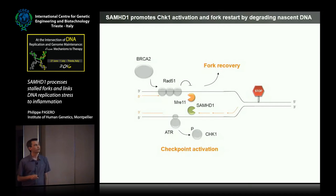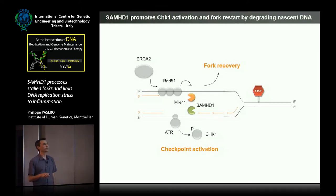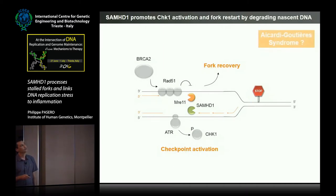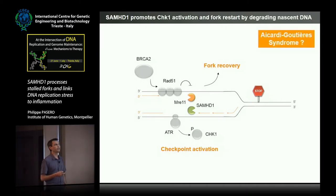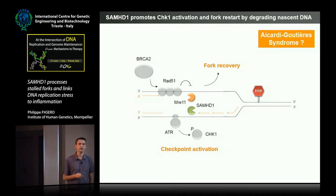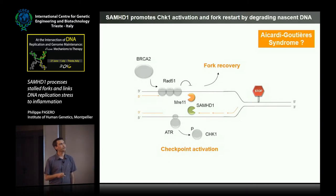What I've shown you so far is that SAMHD1 is important for the processing of arrested replication forks, and this is important for the restart of arrested forks and also for the signaling of arrested forks through the ATR-CHK1 pathway. Now, how about the Aicardi-Goutières Syndrome? I told you that this syndrome is characterized with the accumulation of type 1 interferon in the cells.